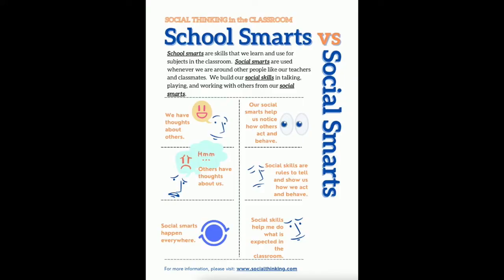Here is a general breakdown of how we think about social smarts. We have thoughts about others, which leads to others having thoughts about us. Social smarts happens everywhere when we are around people. We can even use our social smarts when we are not around people that we might be thinking about.